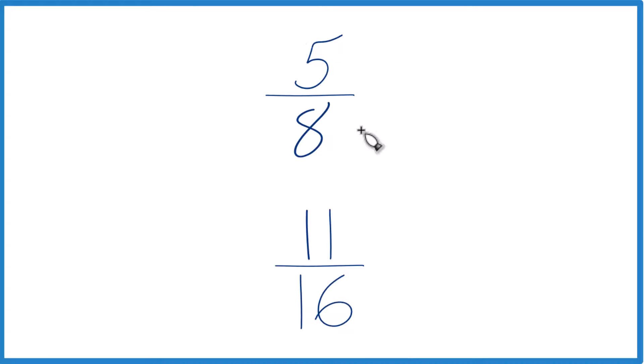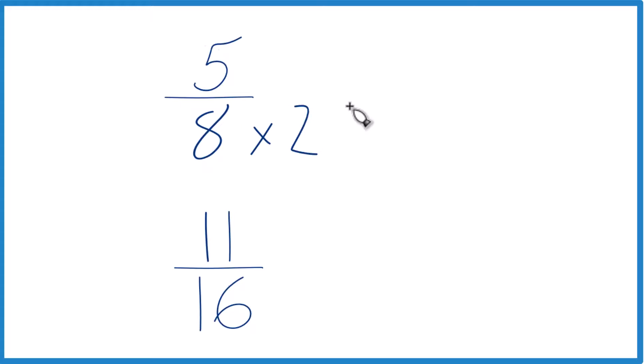So I'm going to multiply 8 times 2 because that gives me 16. And down here I already have 16, so I'm just going to keep that as 16, 11/16.